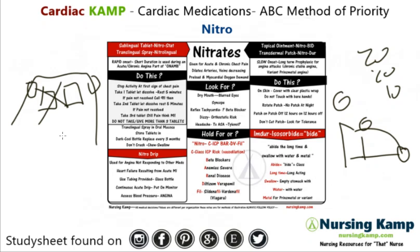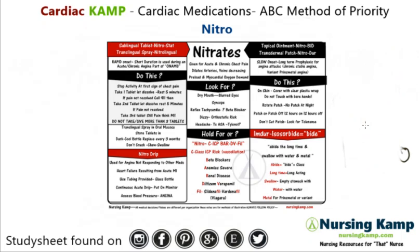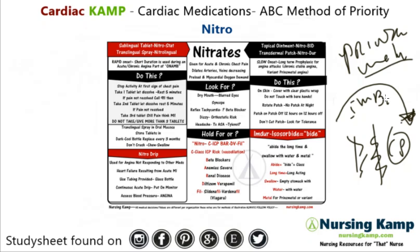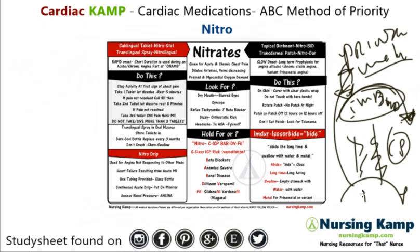We don't cut the patch. The last thing to cover is Imdur — Imdur is chronic, long-term nitro. A lot of times patients with Prinzmetal angina, which involves vasospasms causing chest pain, need a medication to treat that. Imdur is generally that medication. Patients with Prinzmetal often wake up in the middle of the night with chest pain, and Imdur over time helps with that. We monitor for hypotension with Imdur as well.